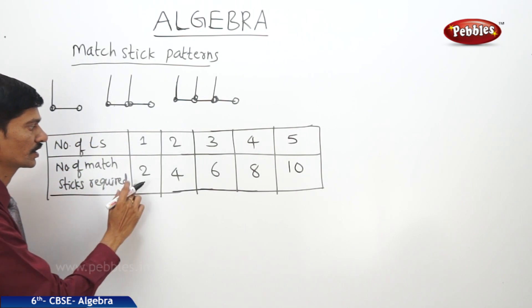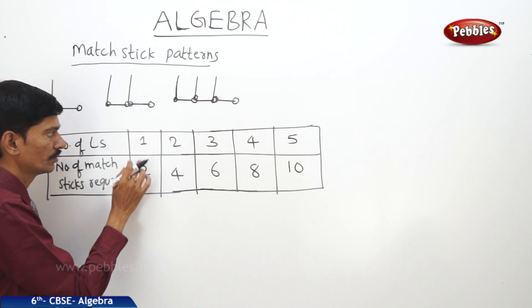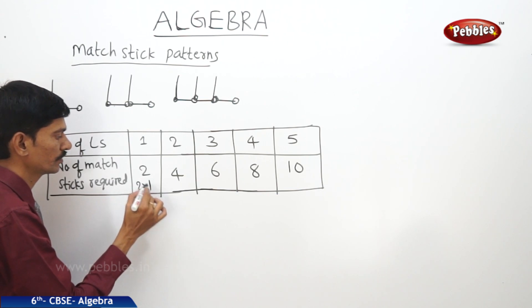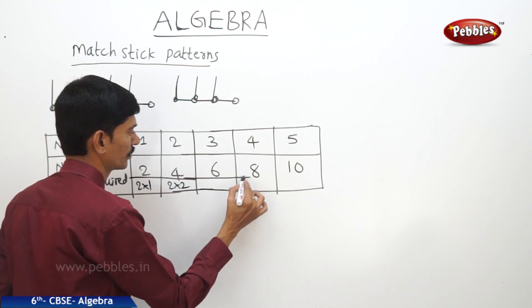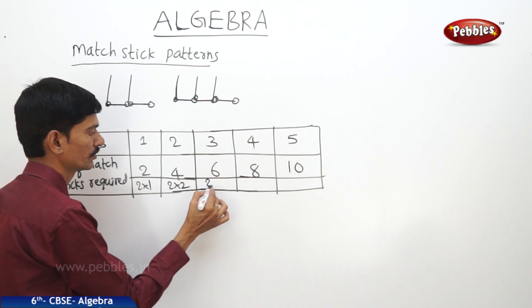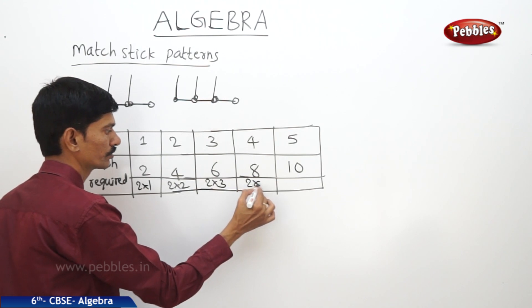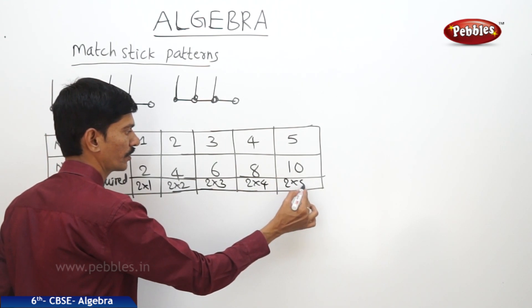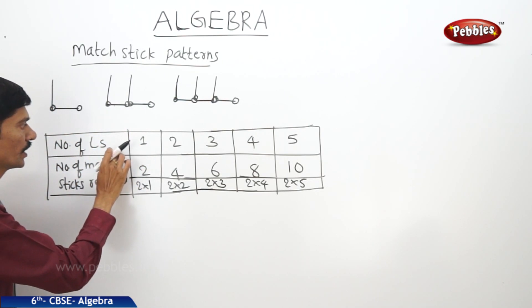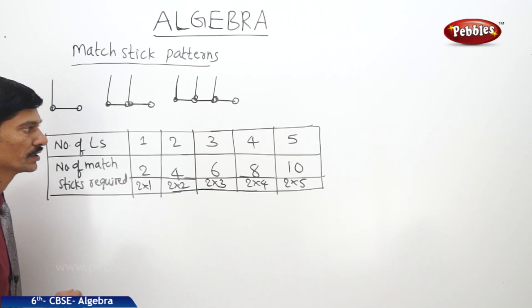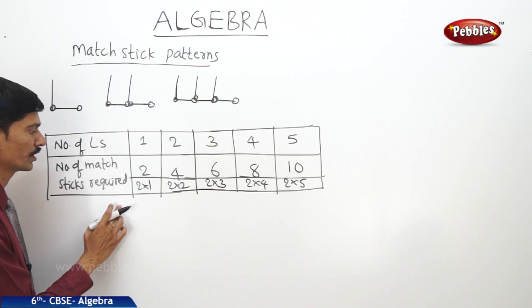If you observe the table, the numbers in the second row are twice the numbers in the first row. So two can be written as two into one, four as two into two, six as two into three, eight as two into four, and ten as two into five. So if we denote the number of L's formed by any English alphabet N, then the number of matchsticks required is two N.